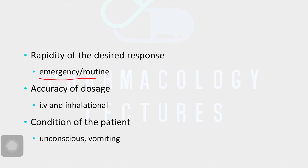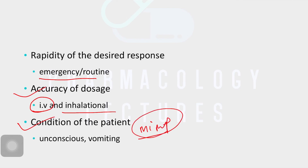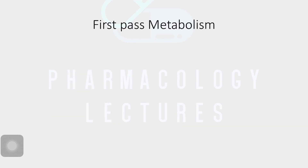Rapidity of desired response is also a factor — whether the condition is an emergency or routine. Accuracy of dosage matters too, for example when choosing IV or inhalation routes. The most important factor is the condition of the patient — whether the patient is conscious, unconscious, vomiting, or having convulsions. All these must be considered before choosing a particular route.